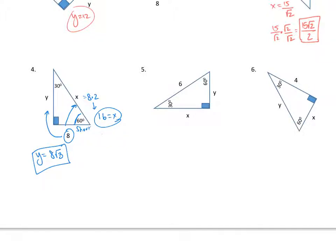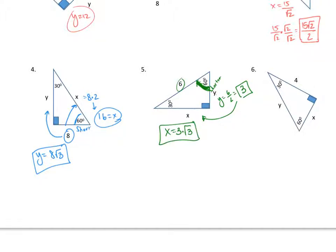For the next example, we have 6 at the hypotenuse and need x and y. The 60-degree angle tells us this side is the shorter leg — it's opposite the 30. The x is the longer leg opposite the 60. Identifying the 60, I go straight across to the shorter leg by dividing by 2, so y equals 6 divided by 2, which is 3. Then for the longer leg, I multiply 3 by root 3, so x equals 3 root 3.